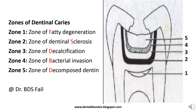This can be memorized by the mnemonic 'Dr. BDS fail,' which gives the different layers from the DEJ inward towards the pulp. Always remember that the zone of fatty degeneration is always the innermost layer.